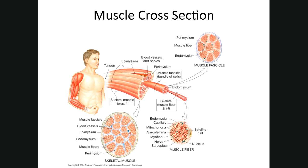Superficial fascia holds your skin and muscle together — if you twist the skin across the surface of your arm it springs back. It also holds your blood vessels in place between the skin and muscle. People whose superficial fascia is poor around their blood vessels have veins that roll, making it difficult to draw blood or inject them.